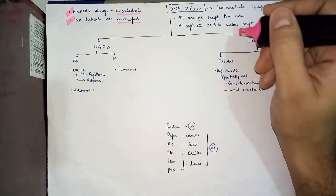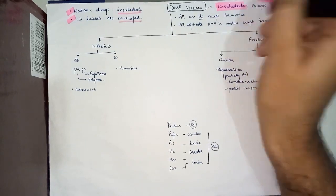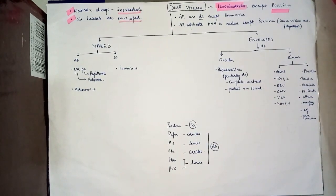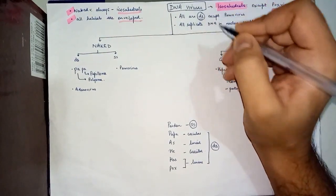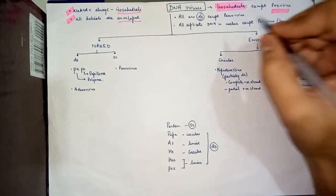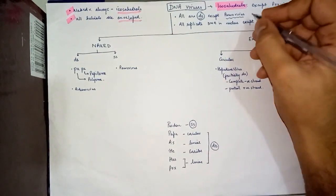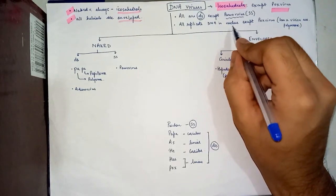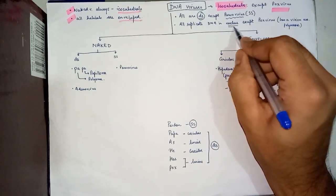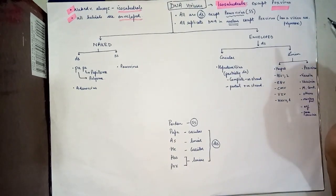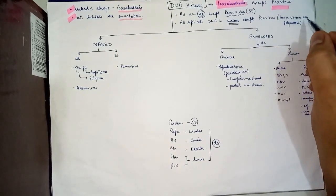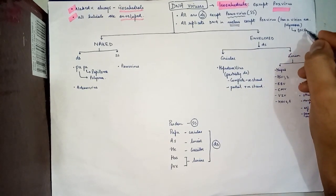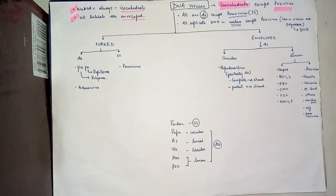For DNA viruses, DNA viruses are all icosahedrals except for pox virus, and all of the DNA viruses are double stranded except for parvovirus. Parvovirus is the only DNA virus that is single stranded. All of the DNA viruses replicate their DNA in the nucleus except for pox virus, and the reason is that pox virus has a virion associated polymerase, and this polymerase is a DNA polymerase.